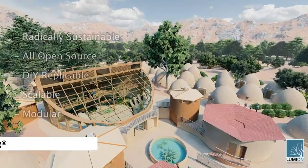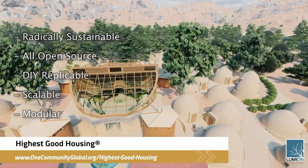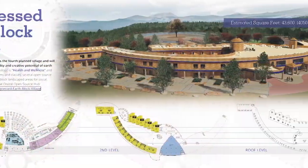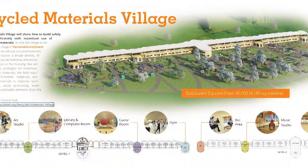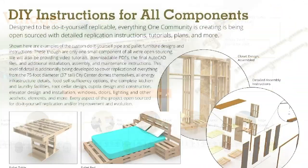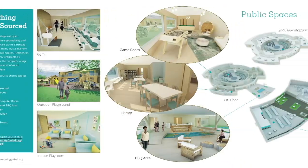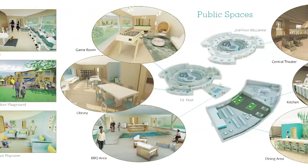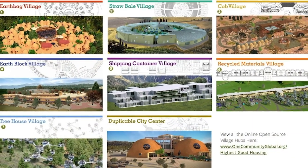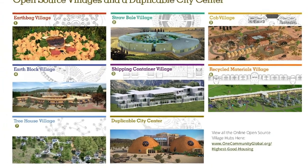The One Community approach to highest good housing is eco-artistic home building that is affordable, sustainable, do-it-yourself duplicable, resource and space efficient, and consists of seven different sustainably constructed village models.